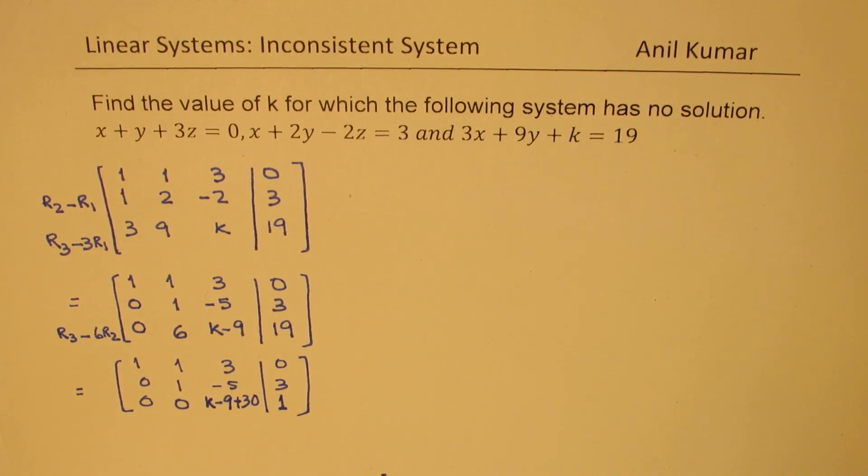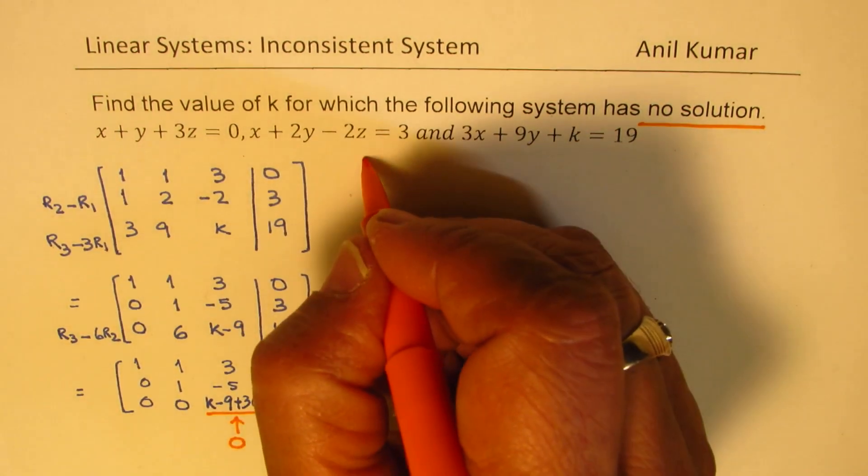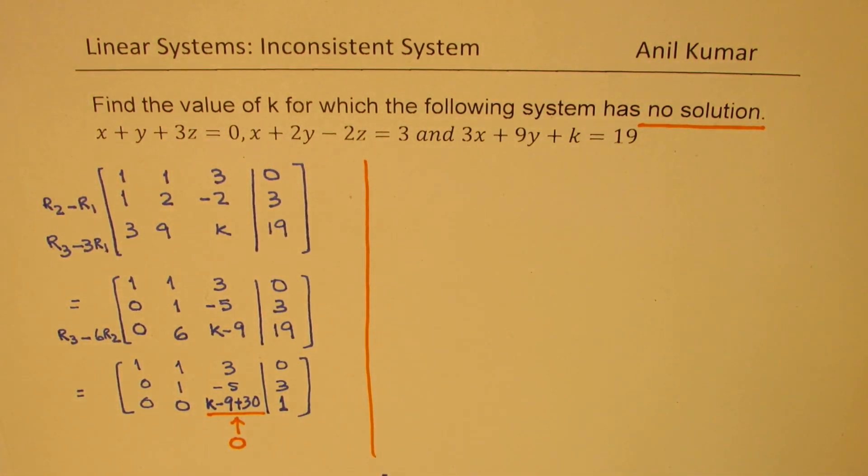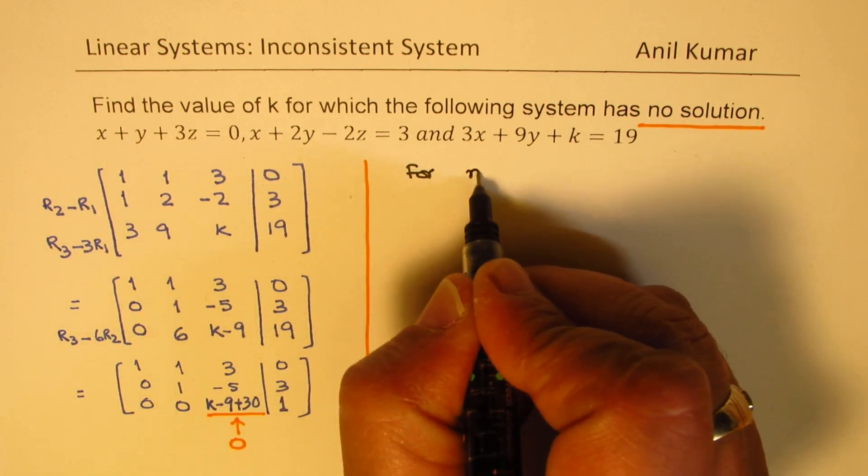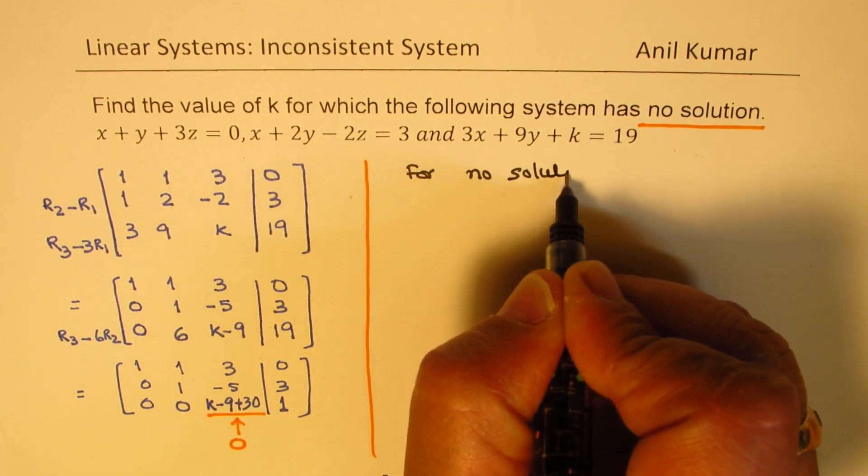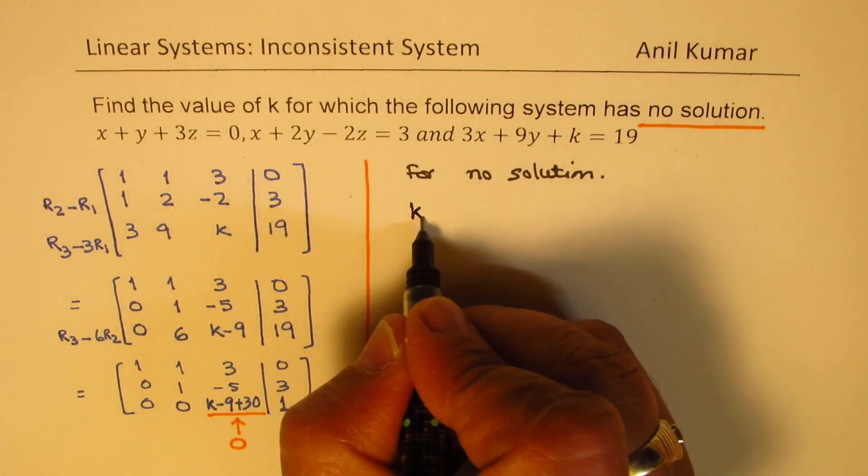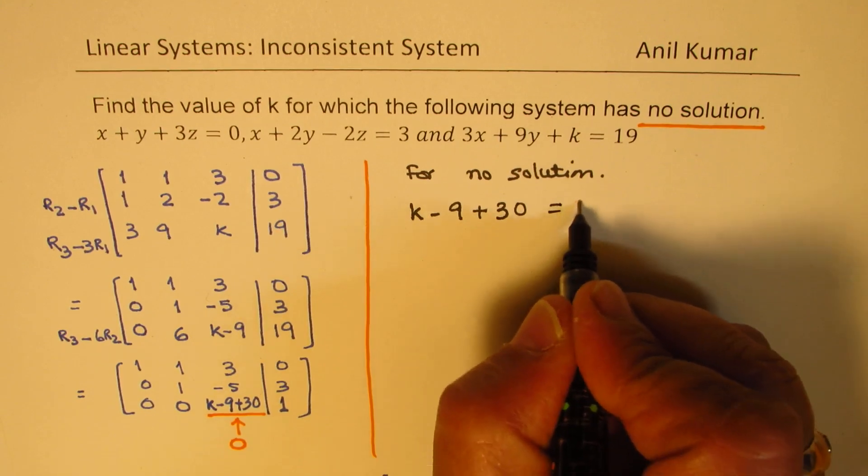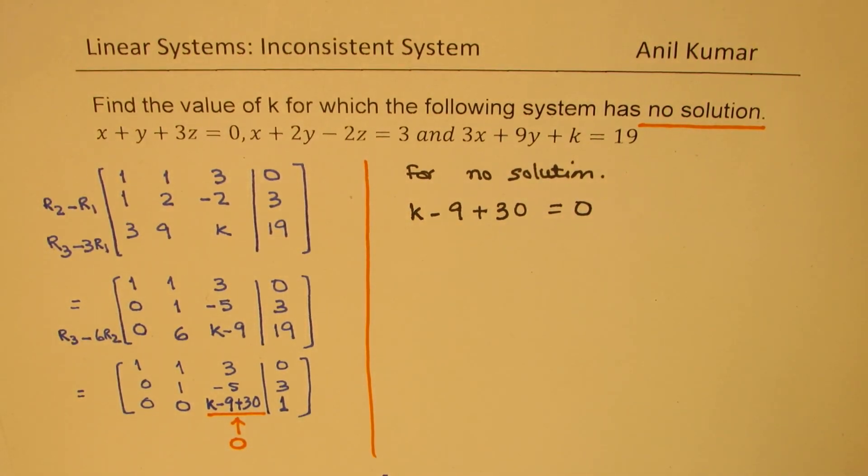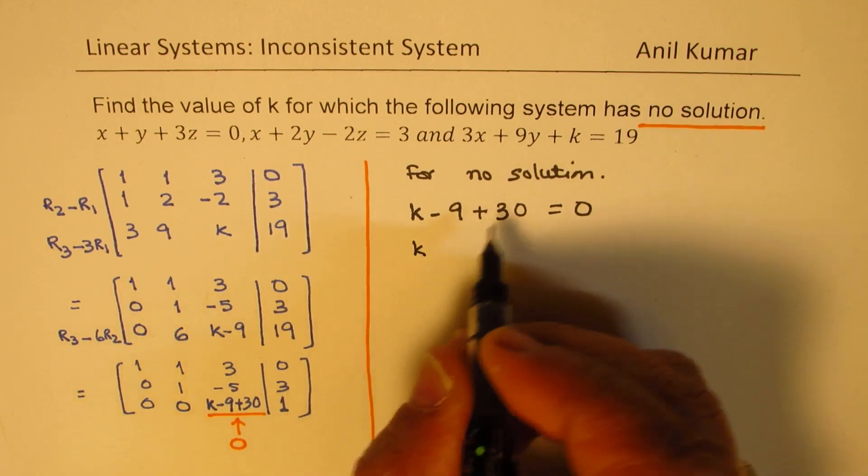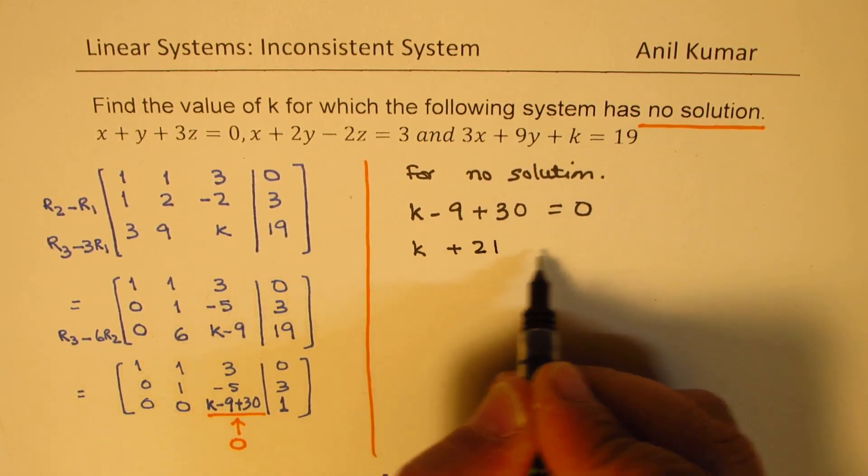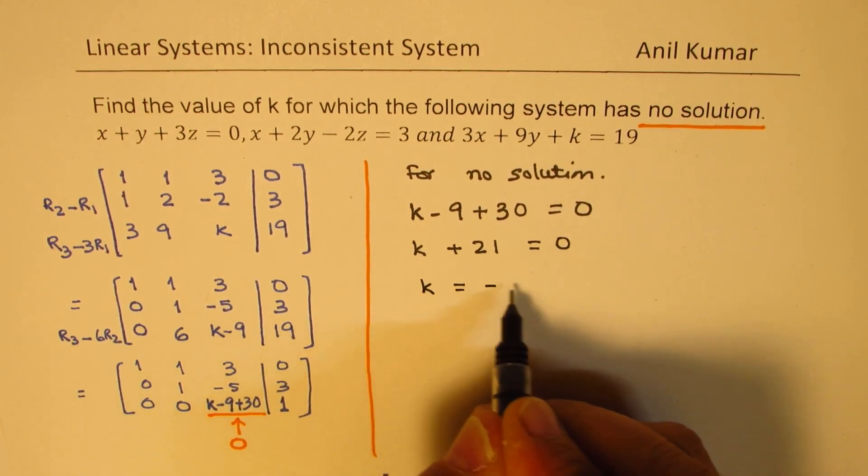Now see, the idea here is to have a situation where we have no solution. So no solution will be possible if I convert this to 0. If I have 0, 0, 0, 0, that can never be equal to 1. So that is how we can get no solution. So for no solution, k minus 9 plus 30 should be equal to 0. Only then we get no solution. Which is basically k, and when you take away 9 it is 21, equals 0, or k is equal to minus 21.